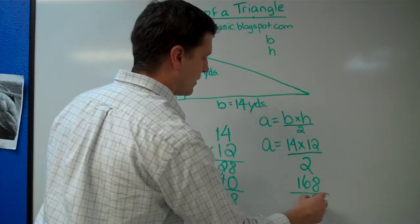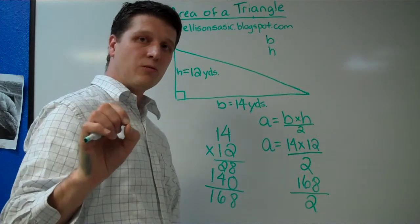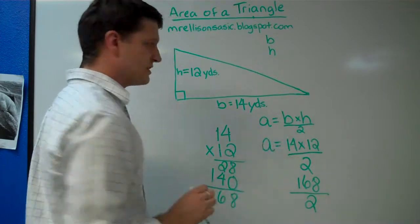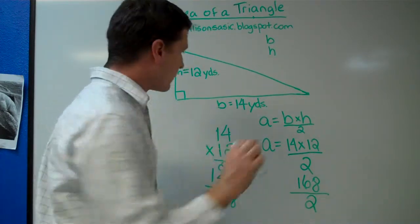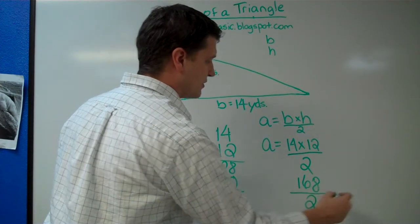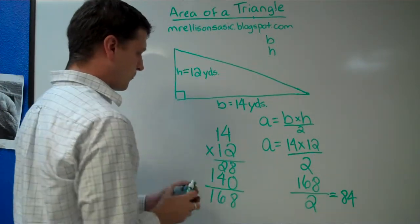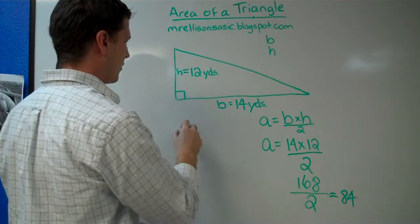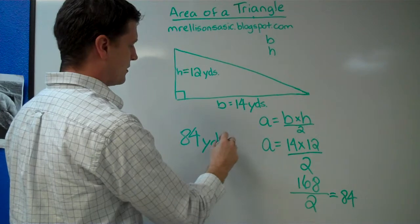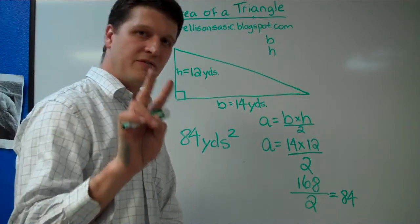And now, what we're going to do is we're going to divide by 2. Now, the area, remember, when we're dealing with area, we're dealing with squared units, since it's a two-dimensional figure. So, it's going to be in units squared. So, we've got 168 divided by 2, which gives us 84. Now, it's not just going to be 84. We're going to use the unit of measurement, which is yards, and squared with a 2, since it's a two-dimensional figure.